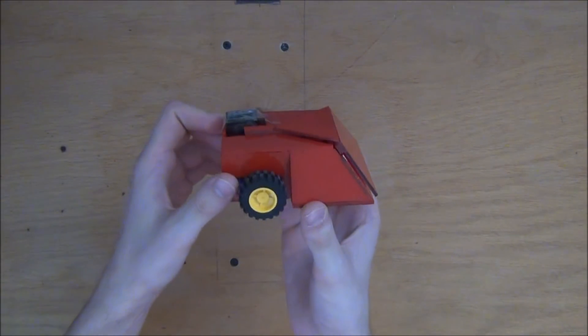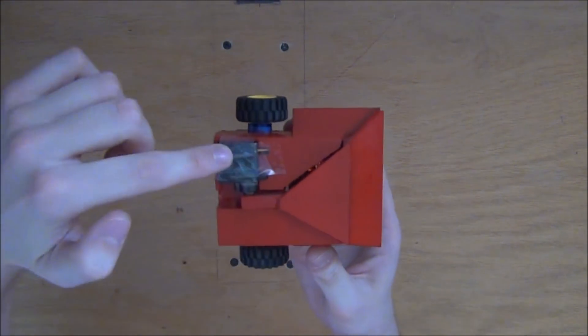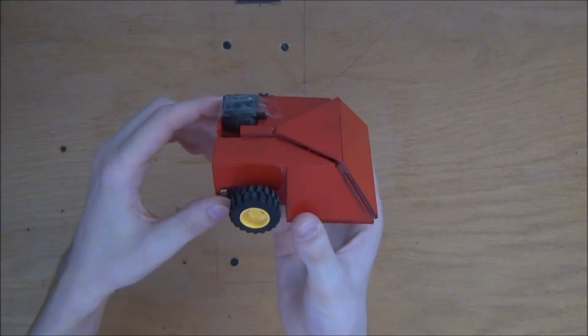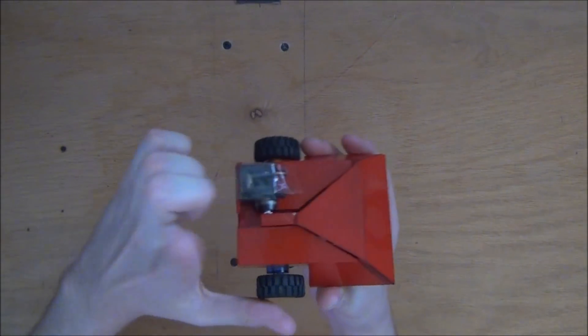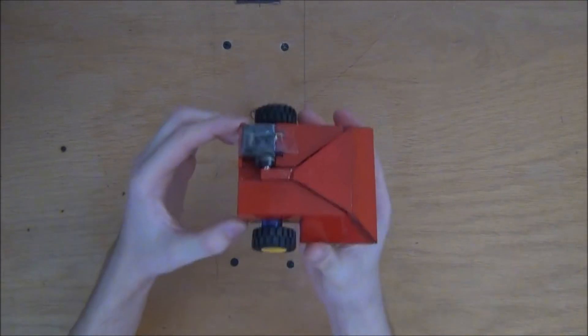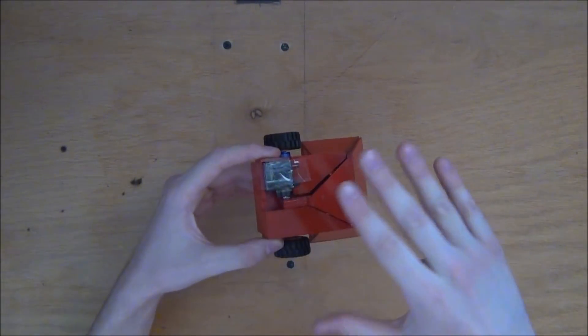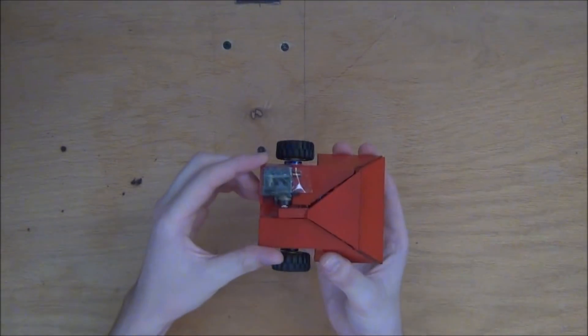Another thing I changed is actually the servo. Right now it's just taped in but it used to only go 90 degrees and I put in some resistors inside the servo. So now I have about 180 degrees of movement which helps a lot with flipping your opponent and also flipping yourself back over.